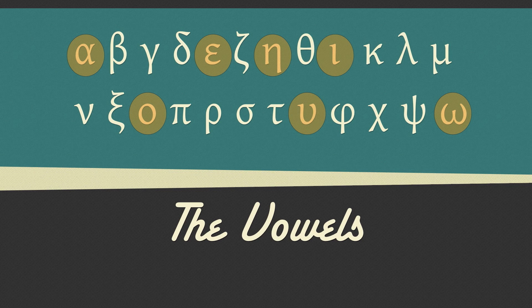Just like in English, some of these vowels are always short, like epsilon and omicron. Some are always long, like eta and omega, while the remaining three can be either short or long depending on the word they are in.